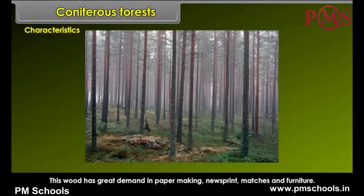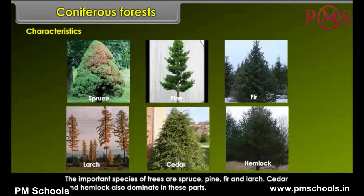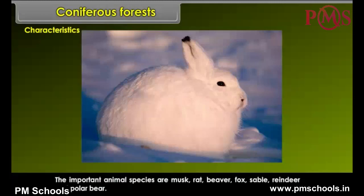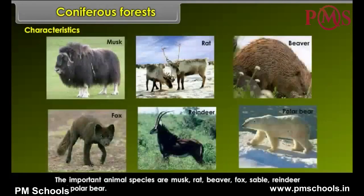The trees are tall and straight with soft wood and light weight. This wood has great demand in paper making, newsprint, matches and furniture. The important species of trees are spruce, pine, fir and larch. Cedar and hemlock also dominate in these forests. The animals of this region are small-sized. They have a thick coat of fur to face the severe cold. The important animal species are musk rat, beaver, fox, sable, reindeer and polar bears.